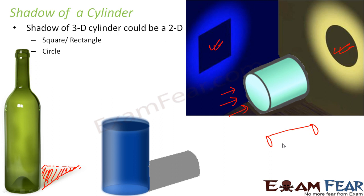But if you have a cylinder like this, in that case, the shadow could be a square. So depending upon the length of the cylinder, you might get a square or rectangle as a shadow.